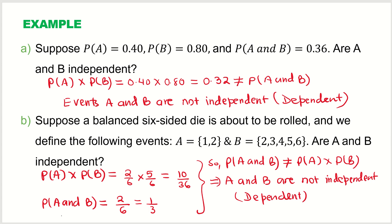In summary, in this video we explored the multiplication rules of probability and understood the difference between dependent and independent events. If P(A and B) = P(A) × P(B), events are independent; otherwise they are dependent. I hope this is helpful — thank you so much for watching.